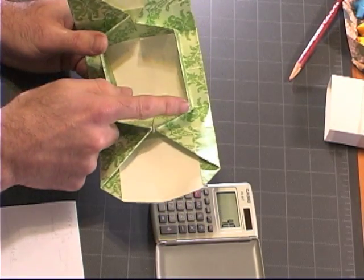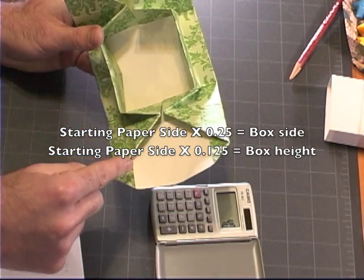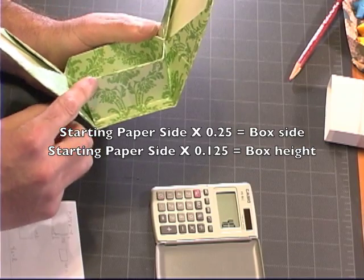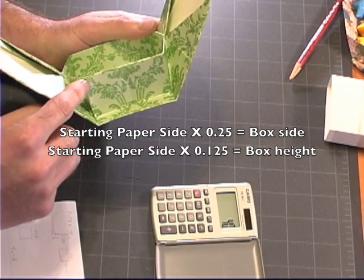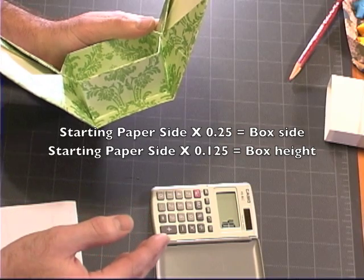As I mentioned before, each one of these sides is 0.25 times the length of your starting piece of paper. The height here is going to be 0.125 times the length of your original piece of paper.